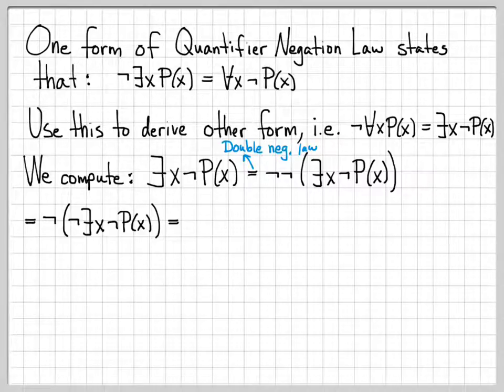And now you can see what's going on here. Right now I have not there exists x. So I'm going to go ahead and use my quantifier negation law that I'm assuming is true to write that as for all x, not not P of x.